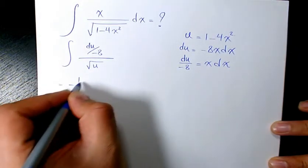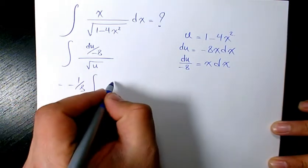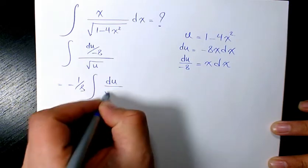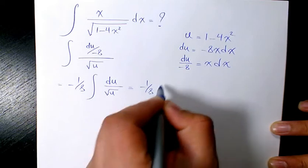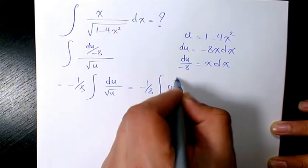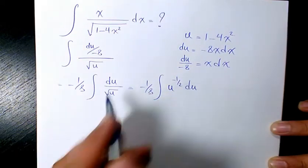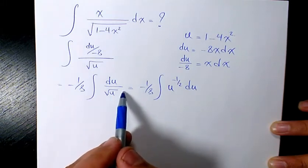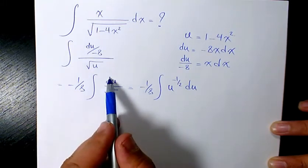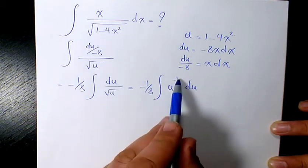So we take it out, negative 1 over 8 du divided by root u. That's going to be negative 1 over 8 u to the power of negative 1 over 2 du. Because square root means to the power of 1 over 2. And since we need to bring it in numerator, it's going to be negative 1 over 2.